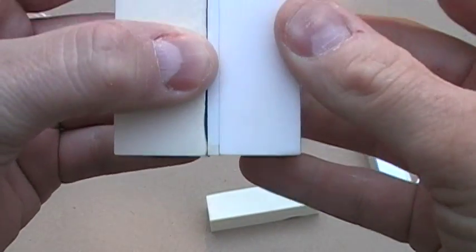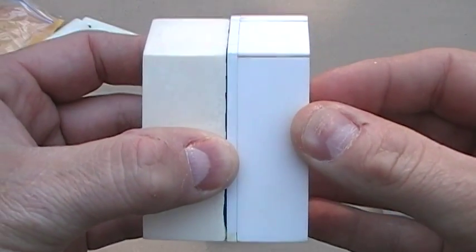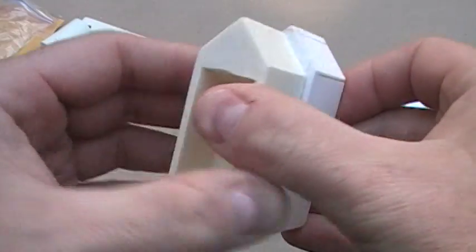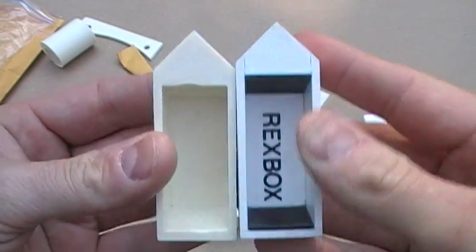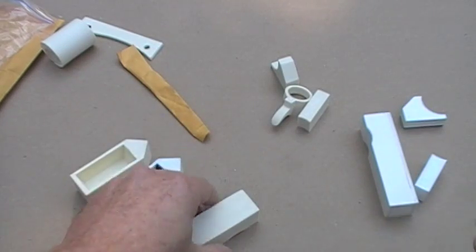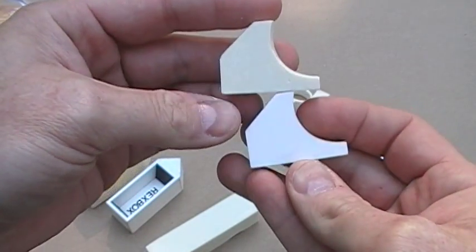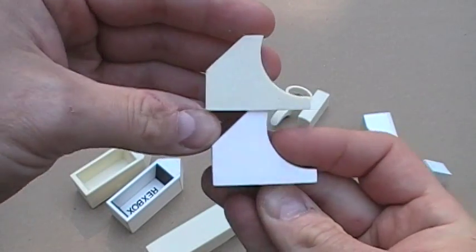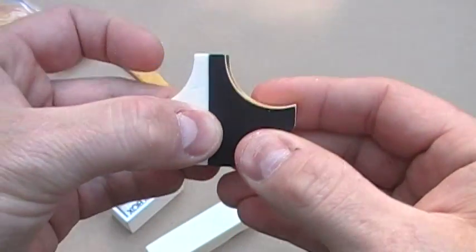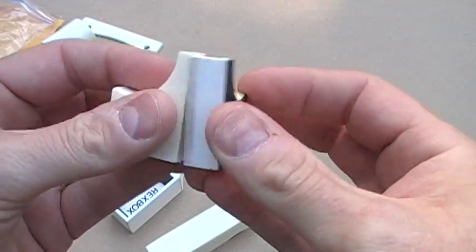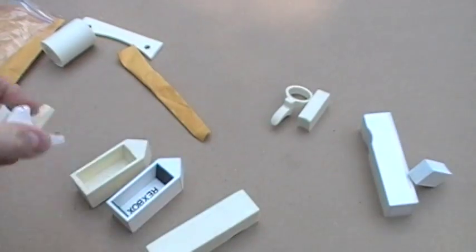Otherwise it's got the usual shrinkage that you would expect from resin. So let's see what else we have here. Oh hey, that looks like a dead ringer to me. Again with the usual shrinkage. I can lay that over. See what else we have.